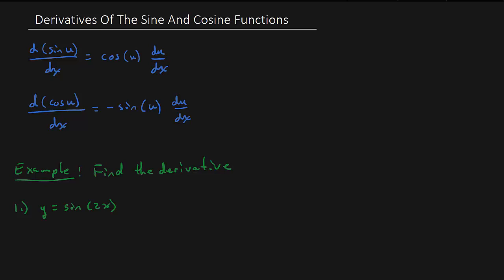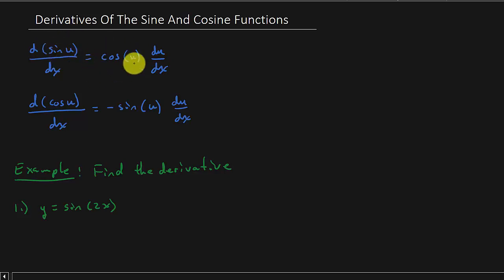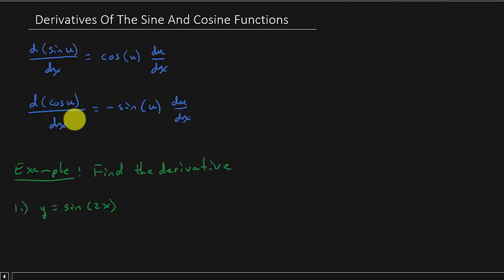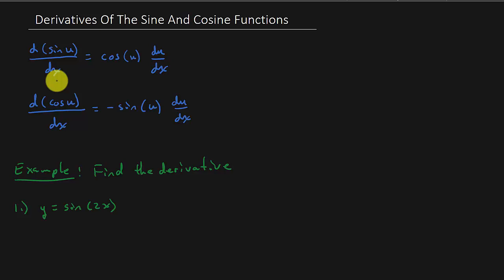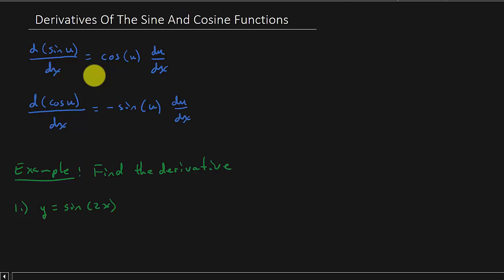This video we're doing sine and cosine, and the video after this will be the other trig functions: tangent, cotangent, secant, and cosecant. The main thing you've got to learn here is what's the derivative of sine? The derivative of sine u is cosine u, and then you multiply by the derivative of whatever you're taking the sine of. The derivative of cosine is negative sine u times the derivative of what you're taking the cosine of. You've got to memorize these — if you don't memorize them, you won't be able to work the problems.